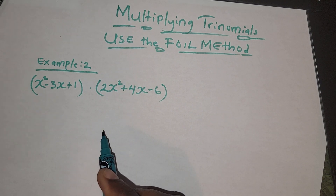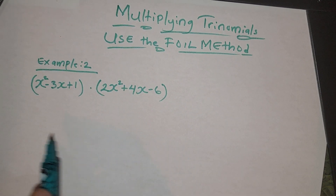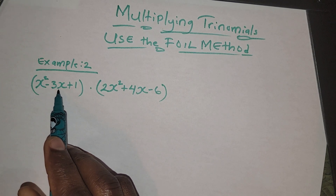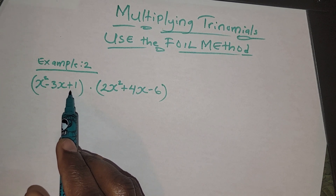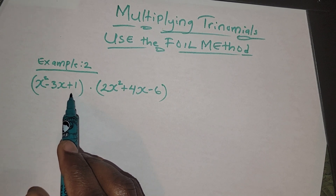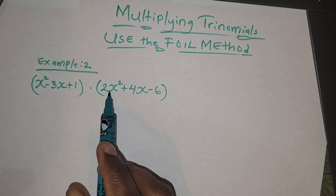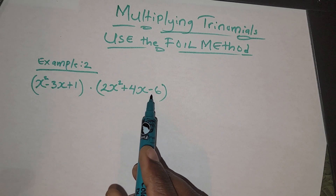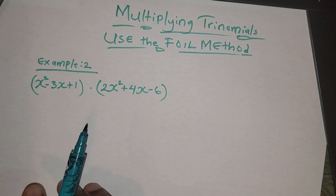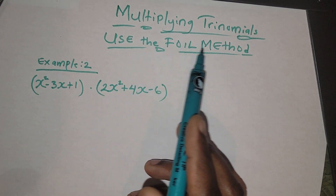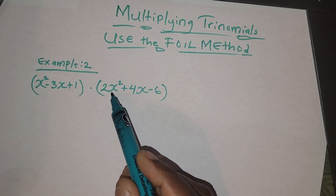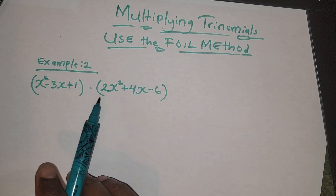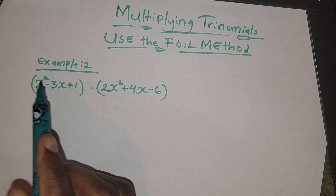Let's do a more complicated problem. We have (x² - 3x + 1) times (2x² + 4x - 6). We'll use the FOIL method to also solve a trinomial.